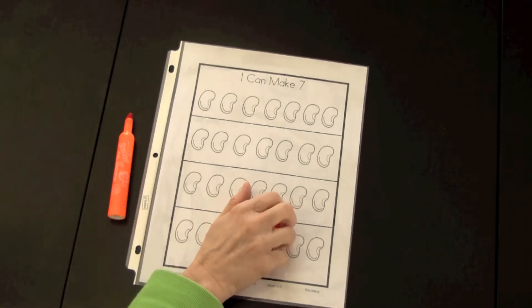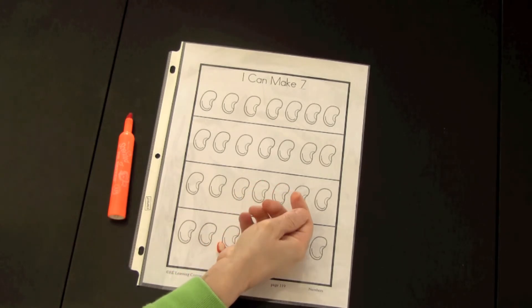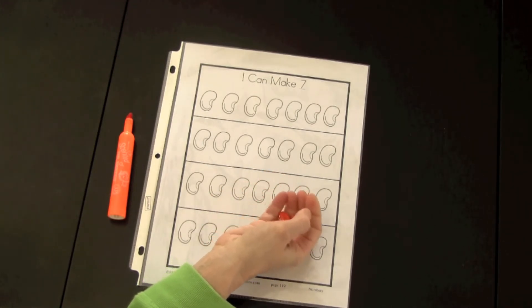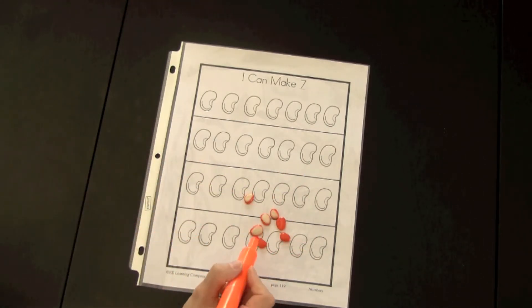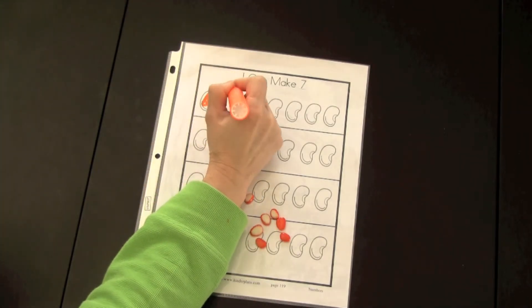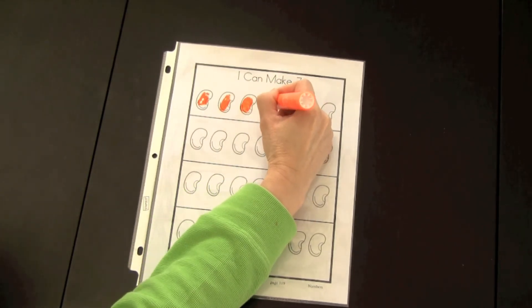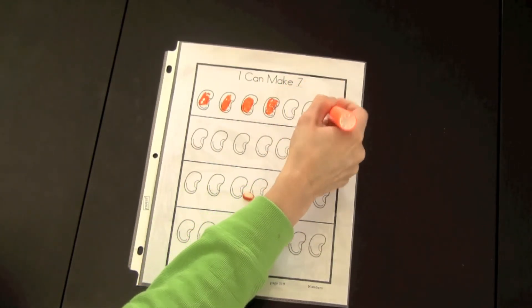I'm going to demonstrate how this can be done. One child would pick up the beans that had been spray painted on one side and the other side kept white. They can clearly see that the addition sentence here would be four and three, so they would color that in.